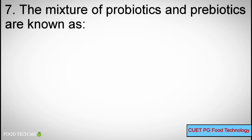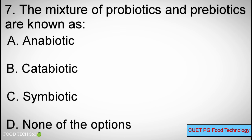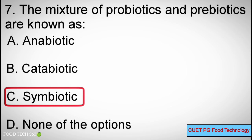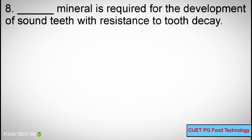Question number 7. The mixture of probiotics and prebiotics are known as — Options: A. Anabiotic, B. Catabiotic, C. Symbiotic, D. None of the options. Correct answer: C. Symbiotic.